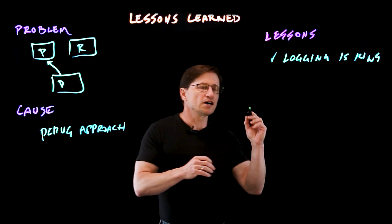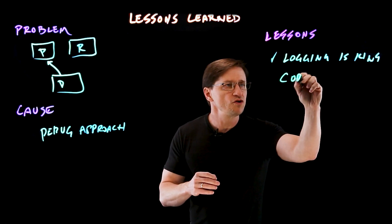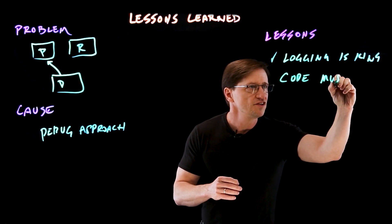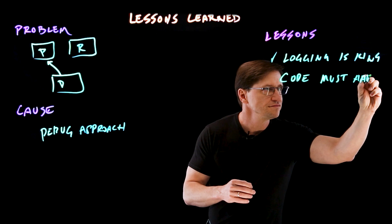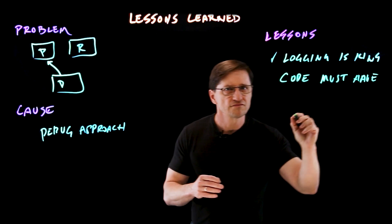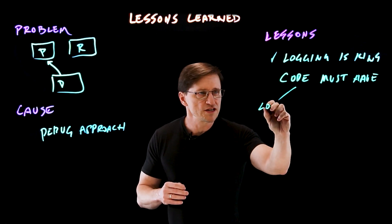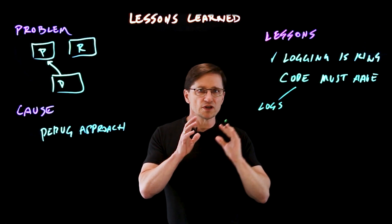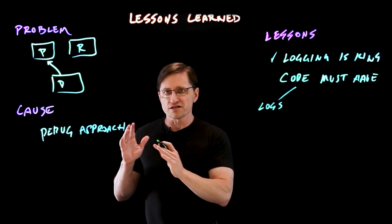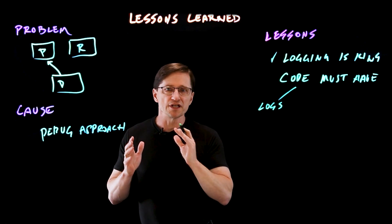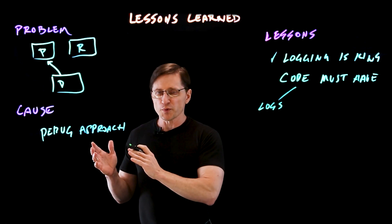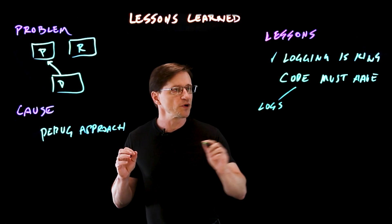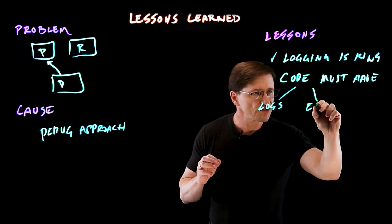He argued that for code to be debuggable, it must have several things. Of course it should have logs, and those logs need to be really high-quality — not just 'an error occurred,' but they need to include all the parameters and all the state necessary to track down the problem, especially for exceptions.